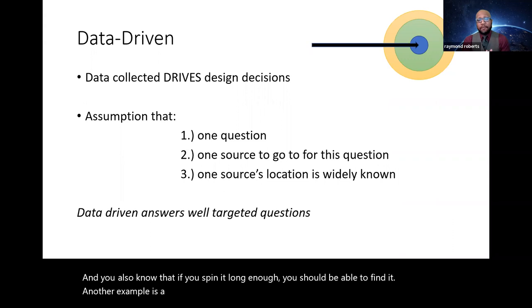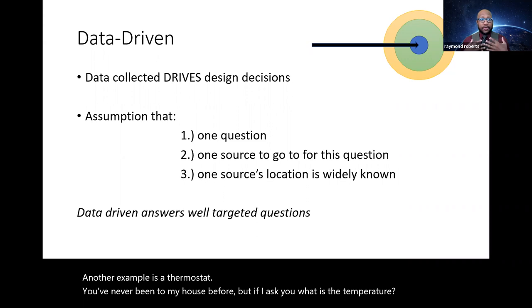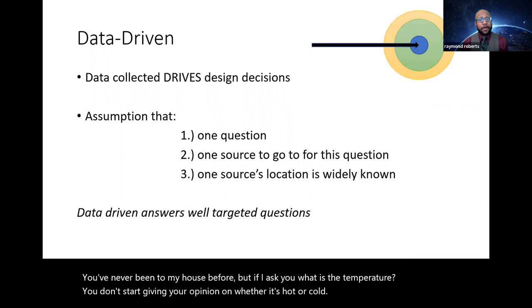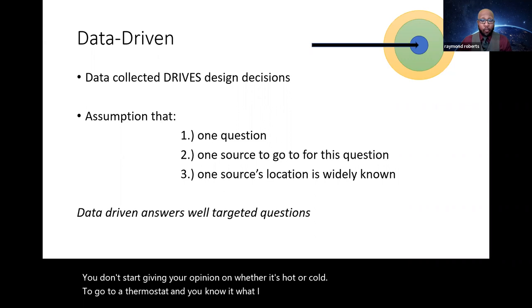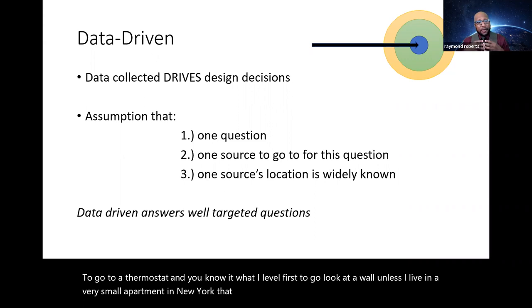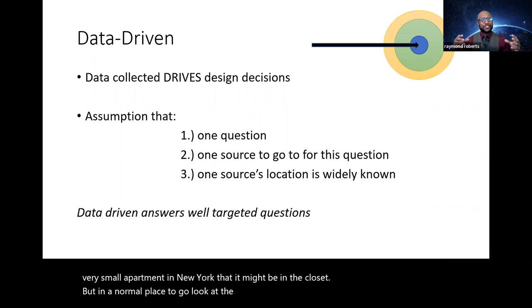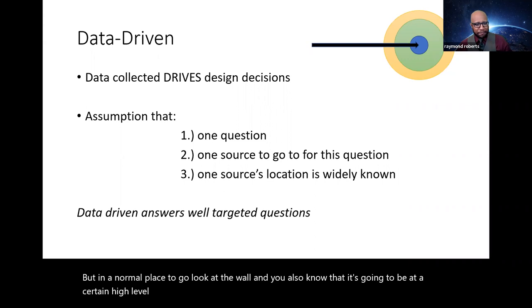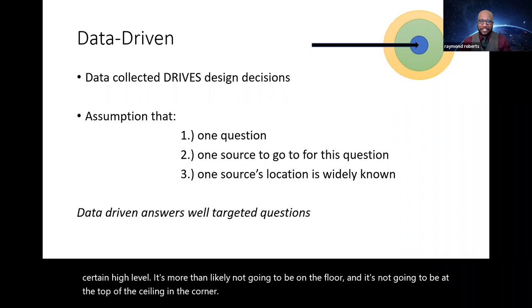Another example is a thermostat. You've never been to my house before, but if I ask you, what is the temperature? You don't start giving your opinion on whether it's hot or cold. You know to go to a thermostat, and you even know at what eye level. First, you know to go look at a wall, unless I live in a very small apartment in New York that it might be in the closet. But in a normal place, you know to go look at the wall. And you also know that it's going to be at a certain eye level. It's more than likely not going to be on the floor, and it's not going to be at the top of the ceiling in the corner. Those are data-driven examples.